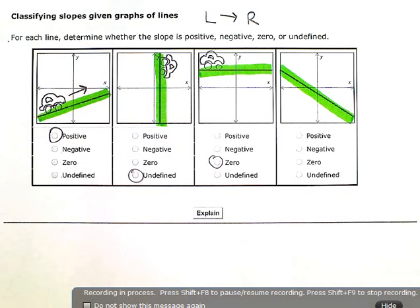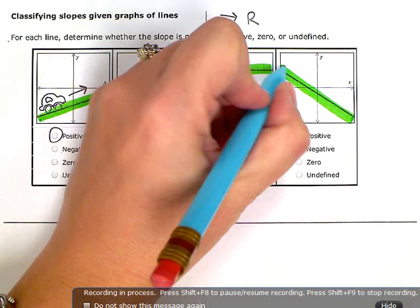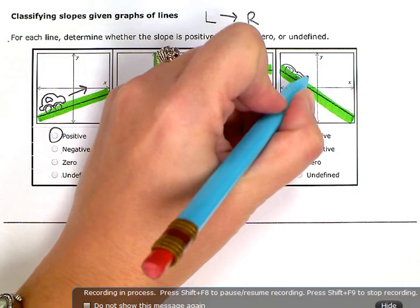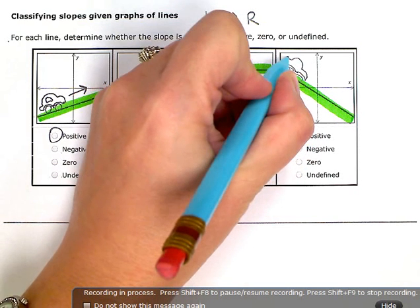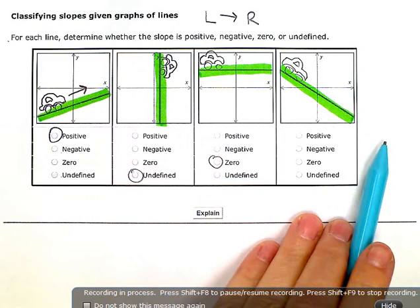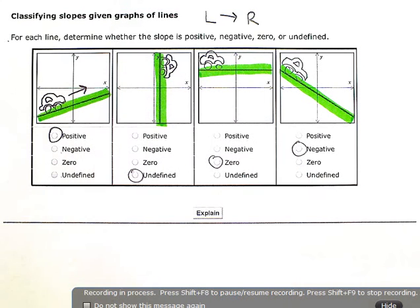You're not going up or down, you're just driving straight across. And then this one, last one, left to right again. Think of just driving a car here, or hiking, or walking, whichever you prefer. Left to right, this one would be going downhill, so it has a negative slope.